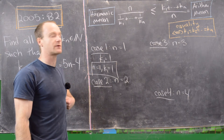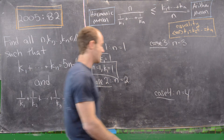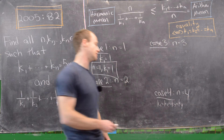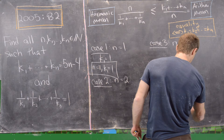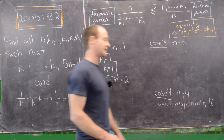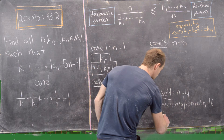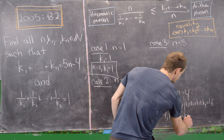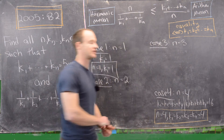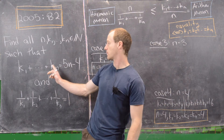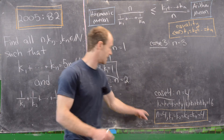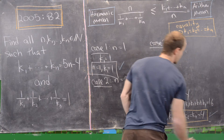For n = 4, equality in the harmonic-arithmetic mean means k₁ = k₂ = k₃ = k₄. They must sum to 5(4) − 4 = 16, so each equals 4. We verify: 4 + 4 + 4 + 4 = 16 = 5(4) − 4 ✓, and 1/4 + 1/4 + 1/4 + 1/4 = 1 ✓. So n = 4, k₁ = k₂ = k₃ = k₄ = 4 is a solution.